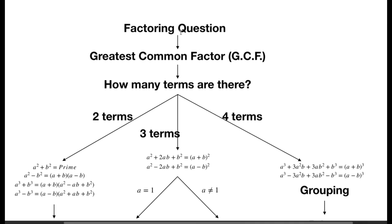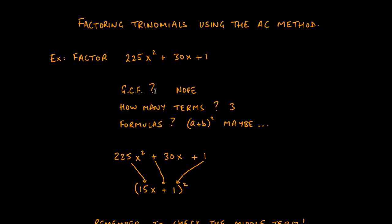So we're given a factoring question. The first thing we look at is the GCF. Next, if there is no GCF or once we find it, is how many terms there are. Looking at the GCF, there is none, because one of the numbers in the problem is a 1, and whenever that's the case we cannot have a GCF — it has nothing to contribute to the 225 or the 30. So GCF is gone.